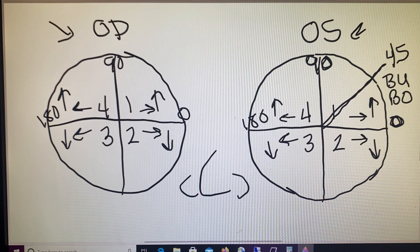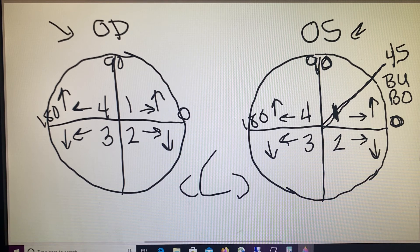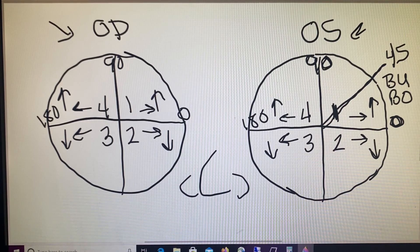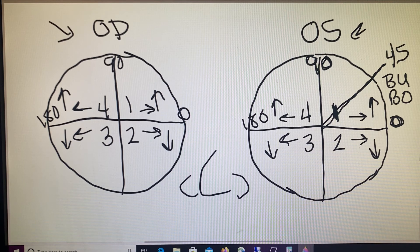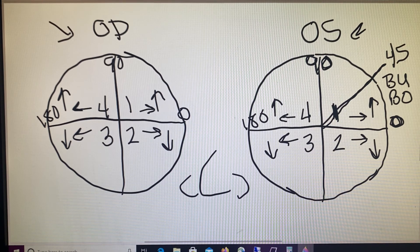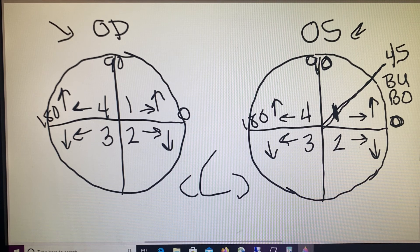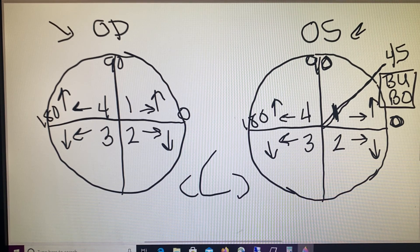And we would say that this patient had prism placed both base up and base out. So they could ask which quadrant is that prism placed at. If it's placed at the 45th meridian, we would answer quadrant one in this scenario. They could also ask you the direction. We would say then that this particular prism was prescribed base up and base out.